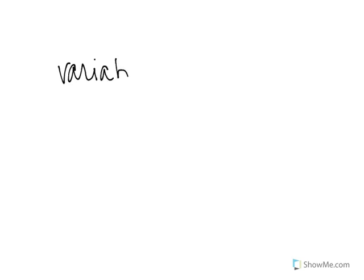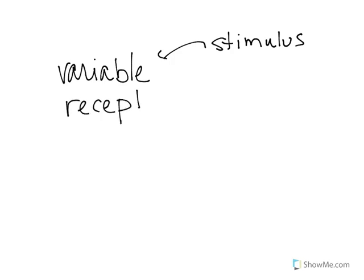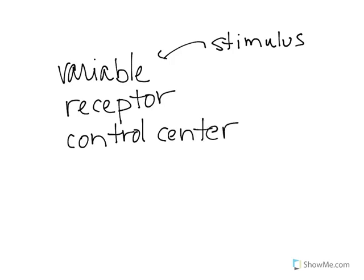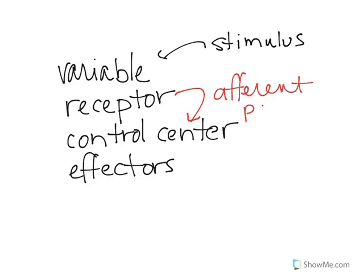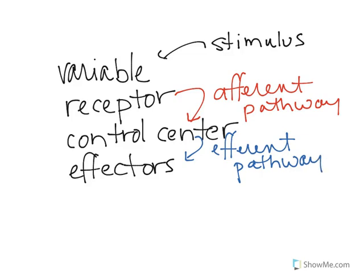If you remember some terminology: you have some sort of variable — something that's changed — and if we have some sort of stimulus that can cause something to change, we have a receptor that can detect that change. That receptor then tells a control center something has happened. The control center knows what to do and tells various effectors what to do. That information from the receptor gets to the control center via an afferent pathway.